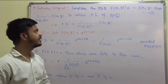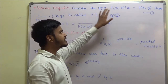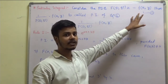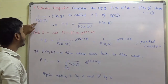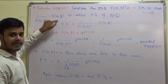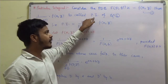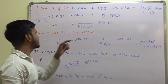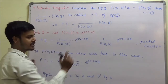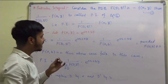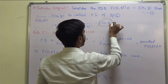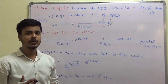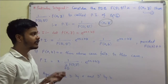What is the particular integral? Consider the partial differential equation of this type. The quantity 1 upon f(D, D') applied to f(x, y) is called the particular integral of the equation, and it is given by PI equals this. Depending on the nature of f(x, y), we have different rules to get the particular integral.